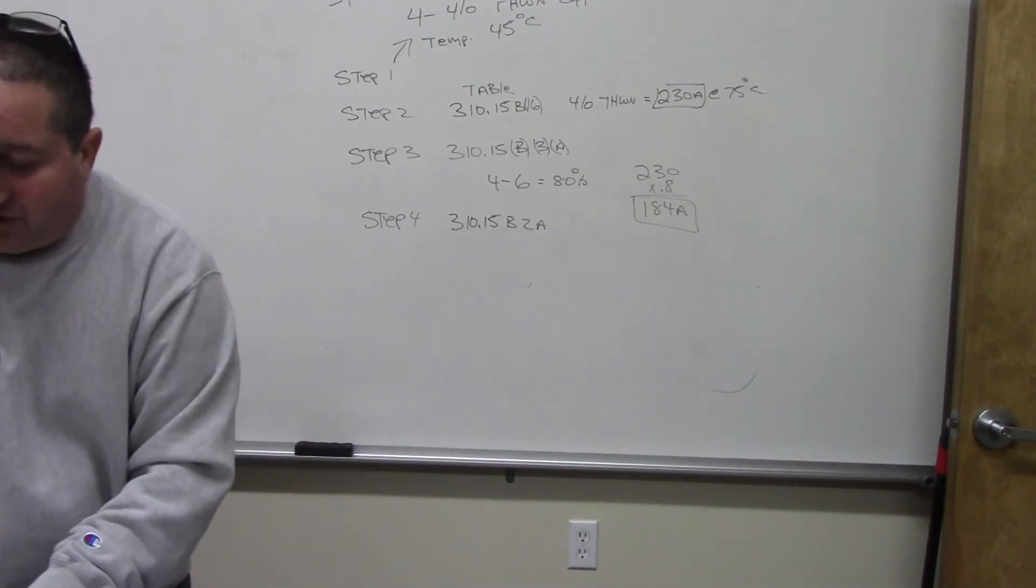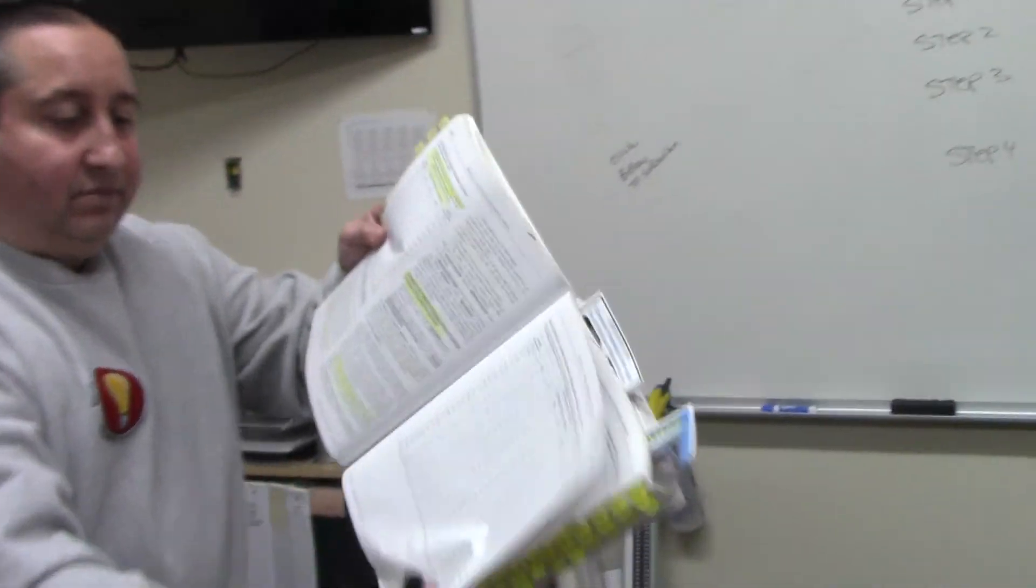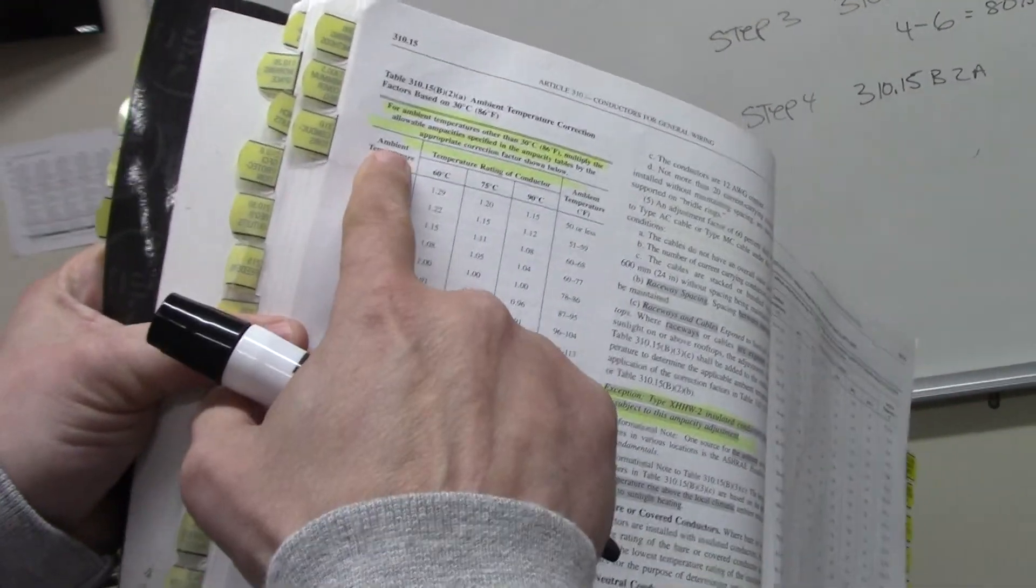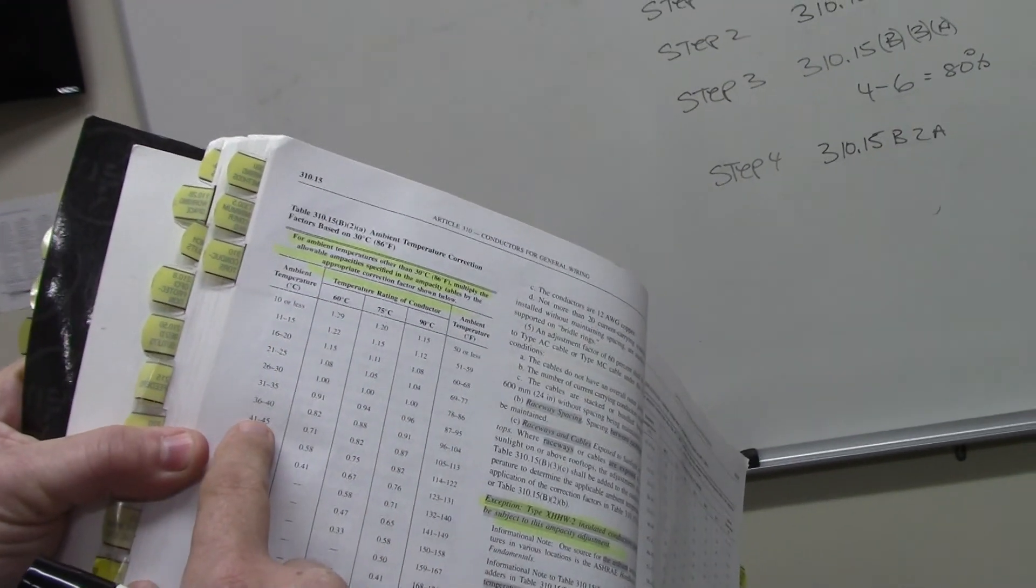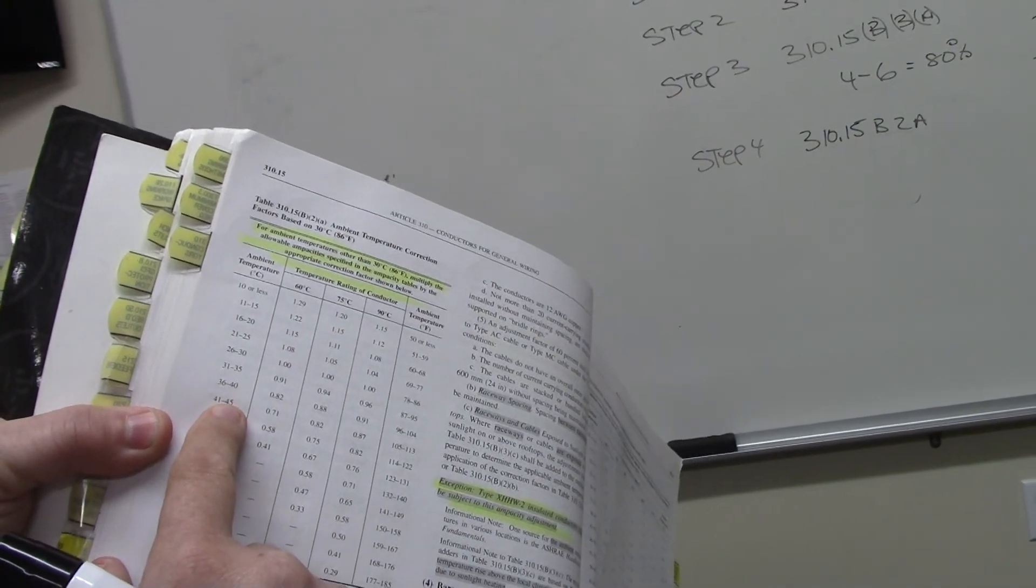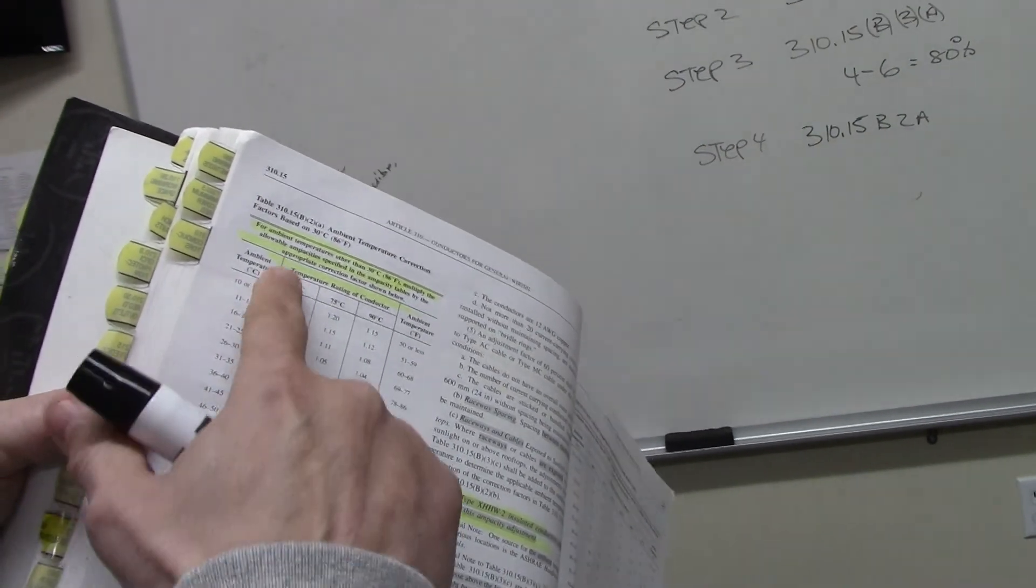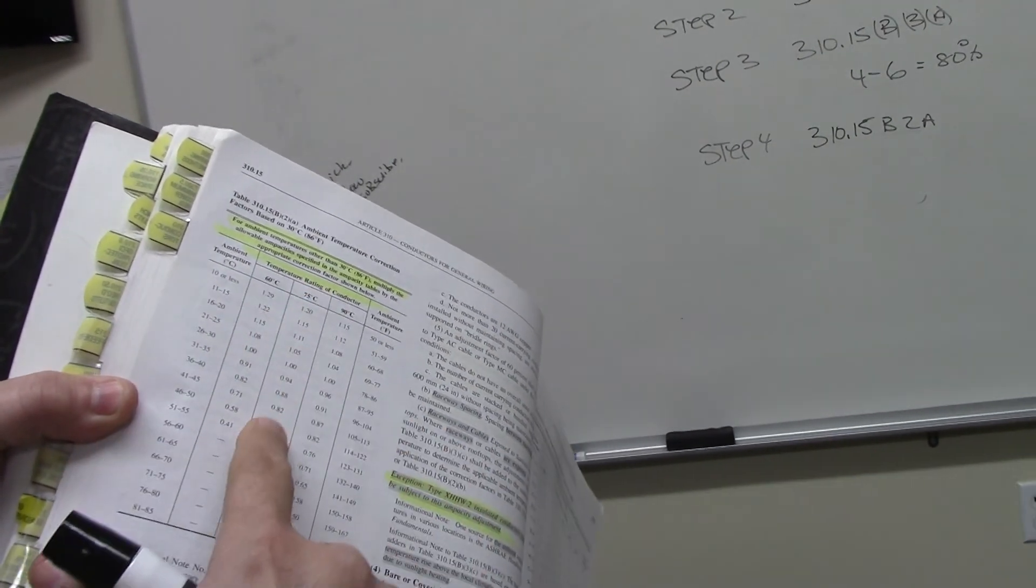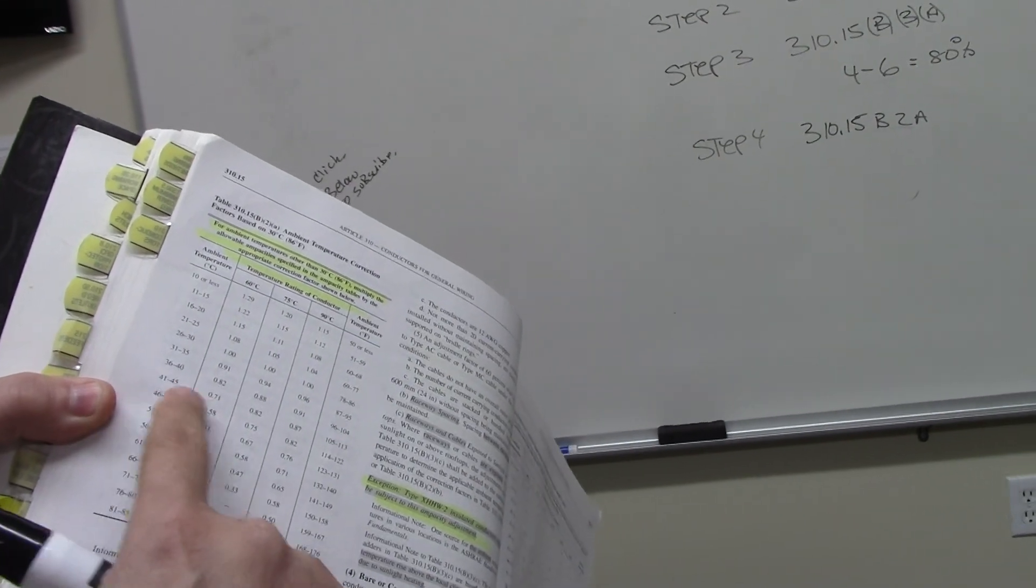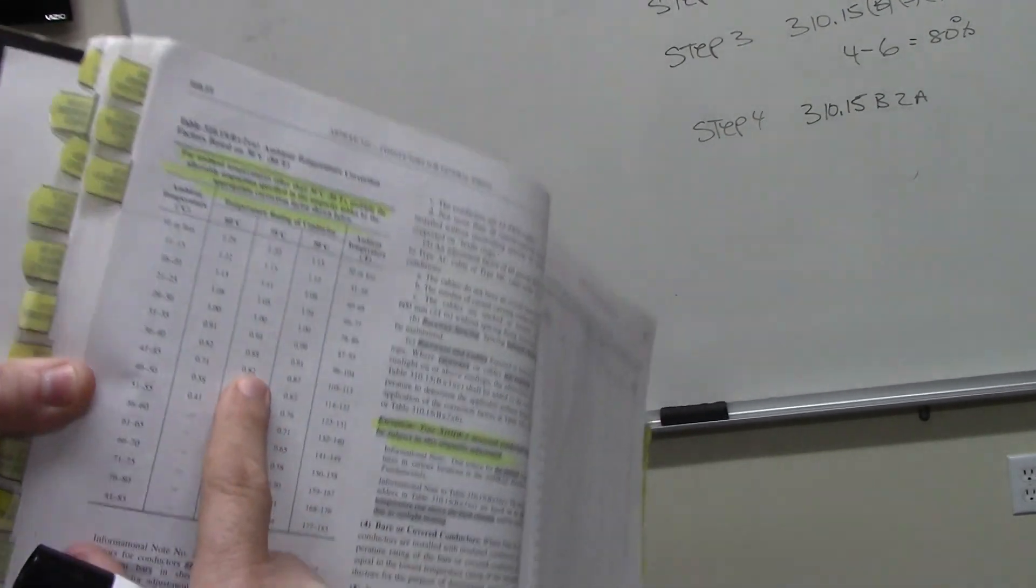If I could just show it to you close up, there's the temperature, ambient temperature is 40, it's actually 45 on the board. We go across, this is 60 degrees, this is the 75, and if we look, it's 0.82, right there if you can see it, 0.82. So that's what we're going to be using.